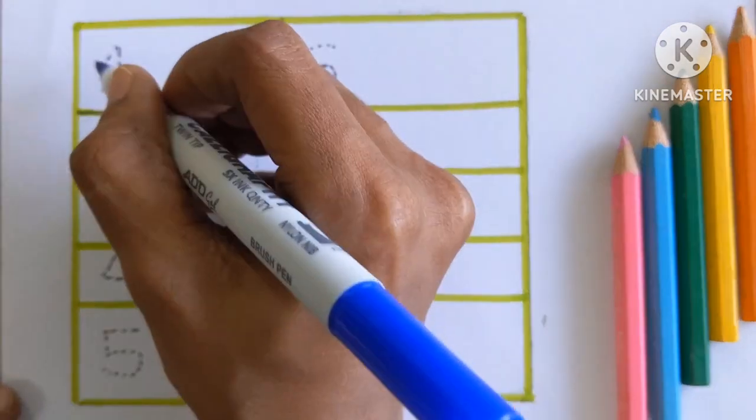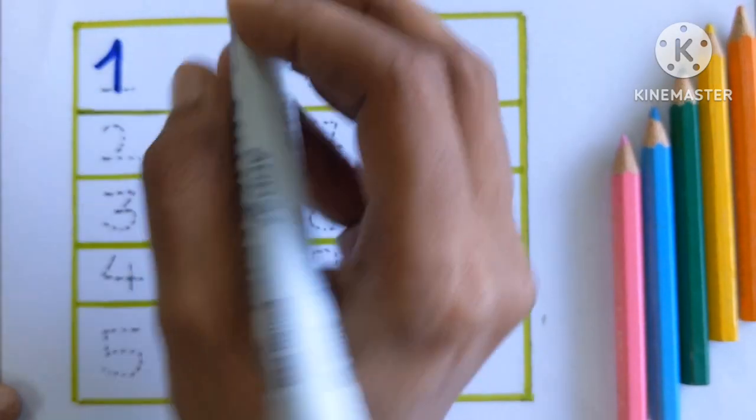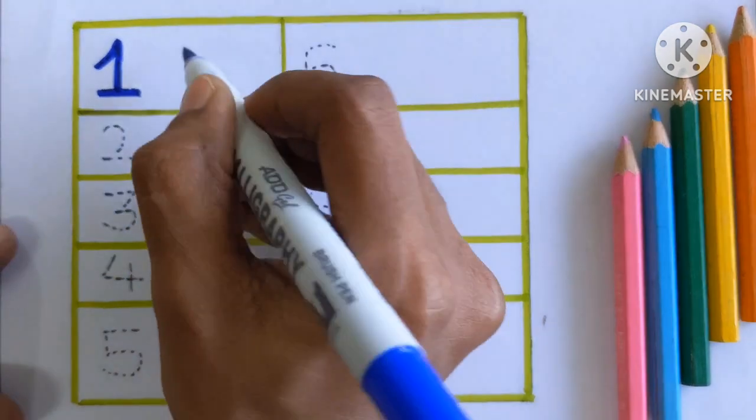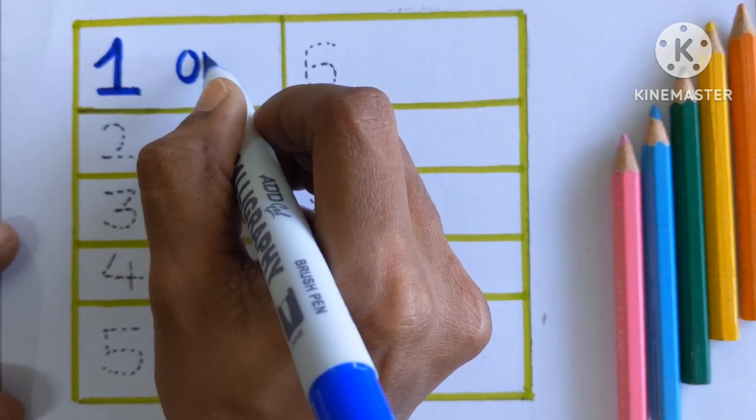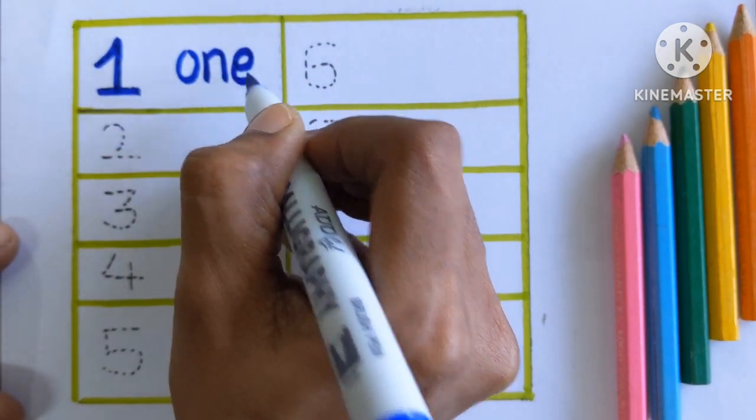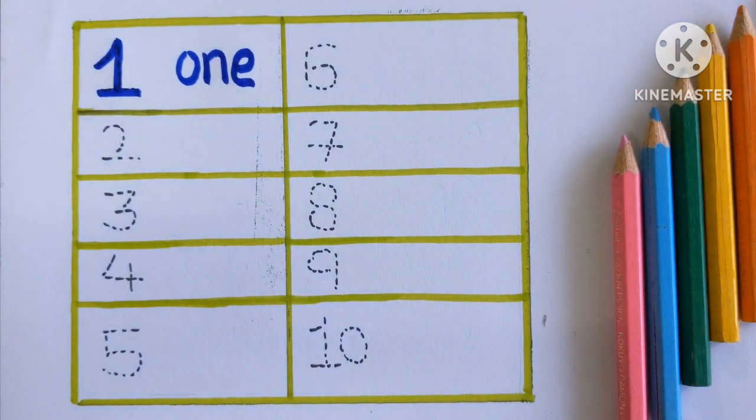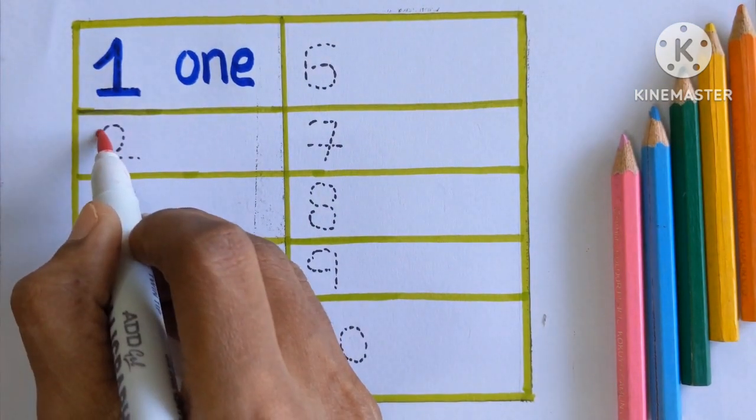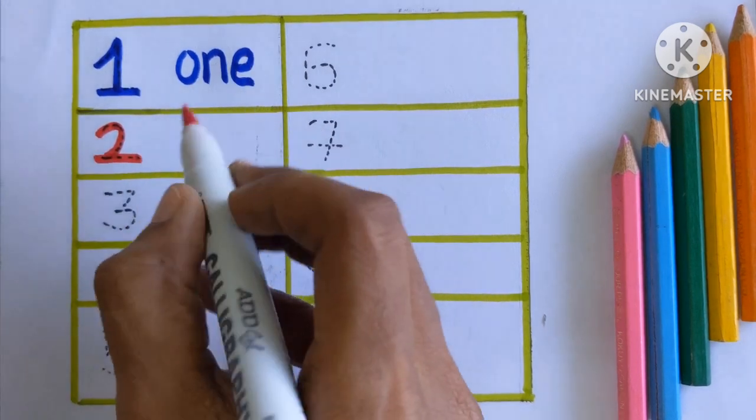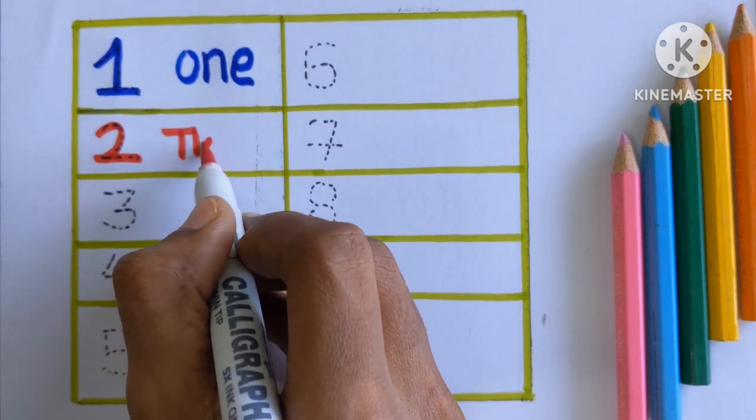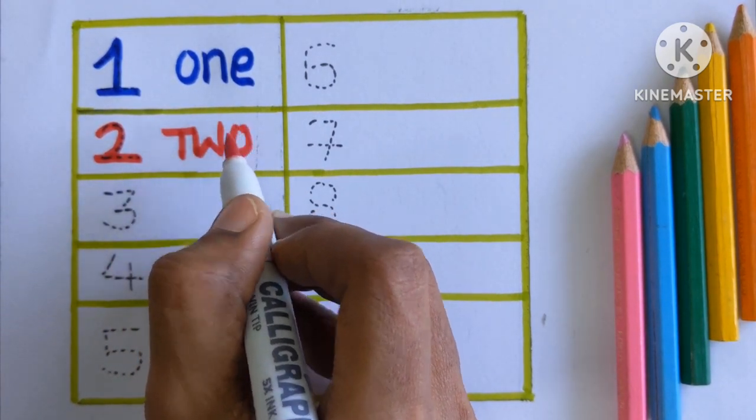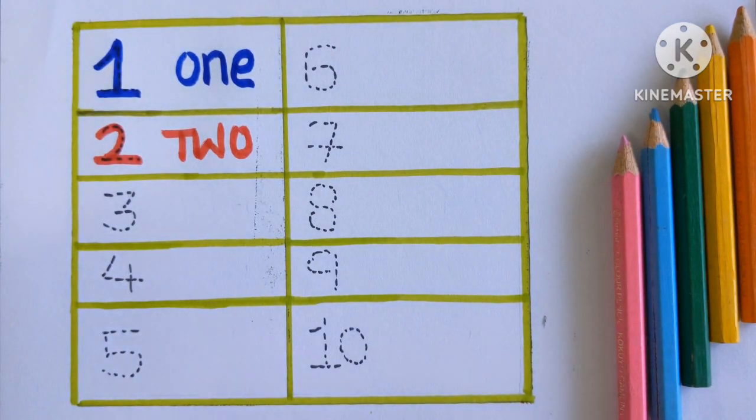At first, 1. O-N-E. 1 with a blue color. Number 2. T-W-O. 2, red color.